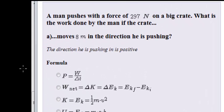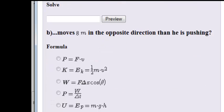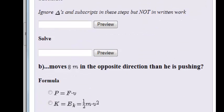A man pushes with a force of 297 newtons on a big crate. What is the work done by the man if the crate: A, moves 8 meters in the direction he is pushing, or B, moves 8 meters in the opposite direction than he is pushing, or C, if the crate does not move? We're going to look at those three scenarios.